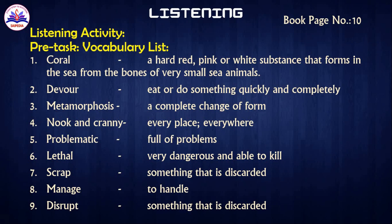First: Coral — a hard red, pink or white substance that forms in the sea from the bones of very small sea animals. Devour — to eat or do something quickly and completely. Metamorphosis — a complete change of form. Nook and cranny — every place, everywhere. Problematic — full of problems. Latent — very dangerous and able to kill. Scrap — something that is discarded. Manage — to handle. Disrupt — something that is discarded.